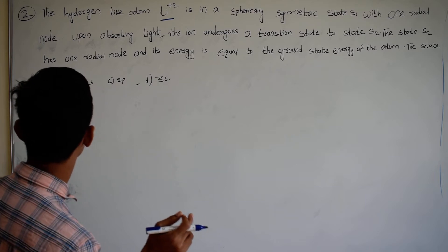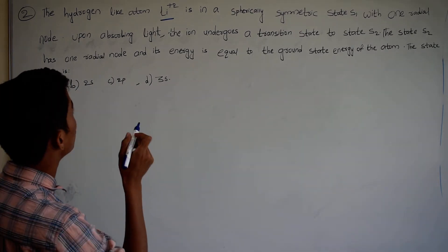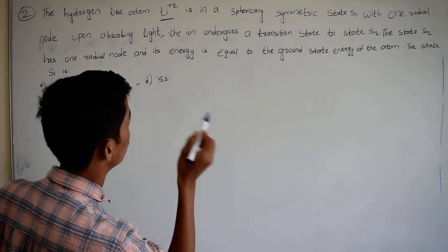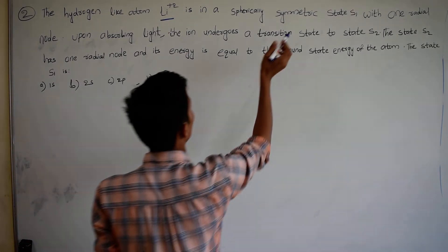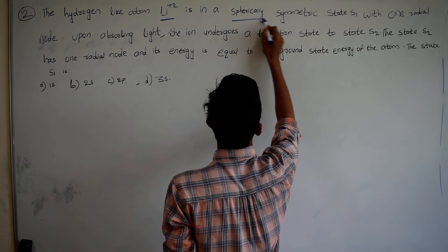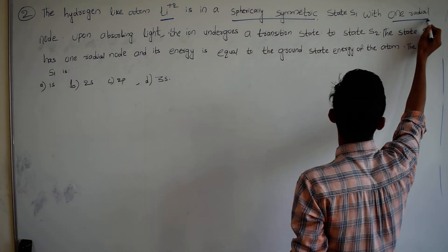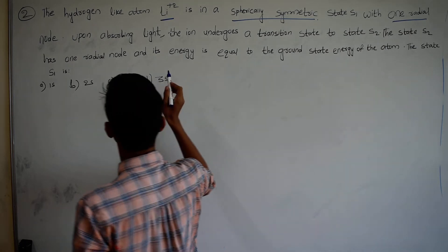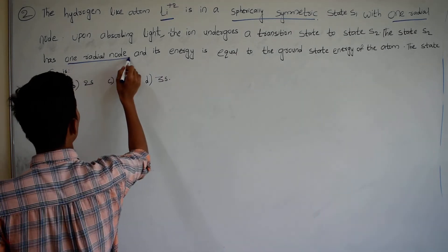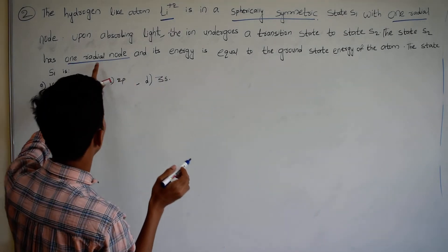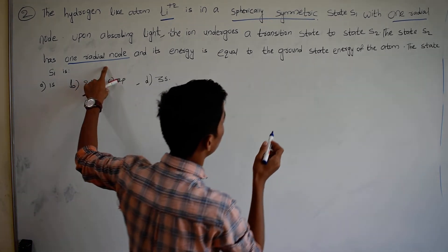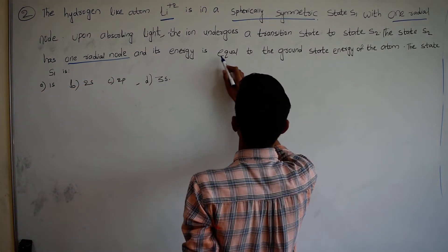Here we have S2 and S1. Now we have a spherical symmetry. It has one radial node. Here we have the spherical symmetry. This is a radial load. The energy is equal to the ground state energy.